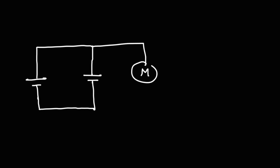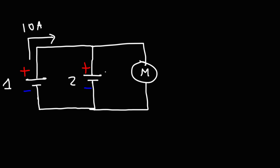To increase the current generated by a battery, connect them in parallel. If battery one shorted can release 10 amps and battery two can release 5 amps, the current flowing in the meter is the sum: 15 amps total. So connecting batteries in series increases voltage, while connecting them in parallel increases current.